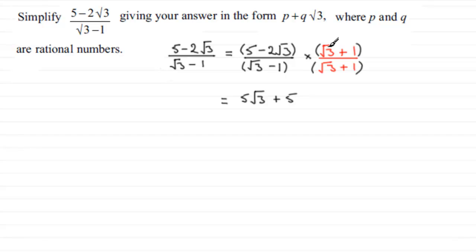And now we've got minus 2 root 3 times the root 3. Well, root 3 times root 3 is, in fact, 3. You could think of it as root 3 times root 3 is the root of 9, which is 3. So minus 2 times 3 is minus 6. And then you've got minus 2 root 3 times the plus 1. So that's going to be minus 2 root 3. So that's the top line done.